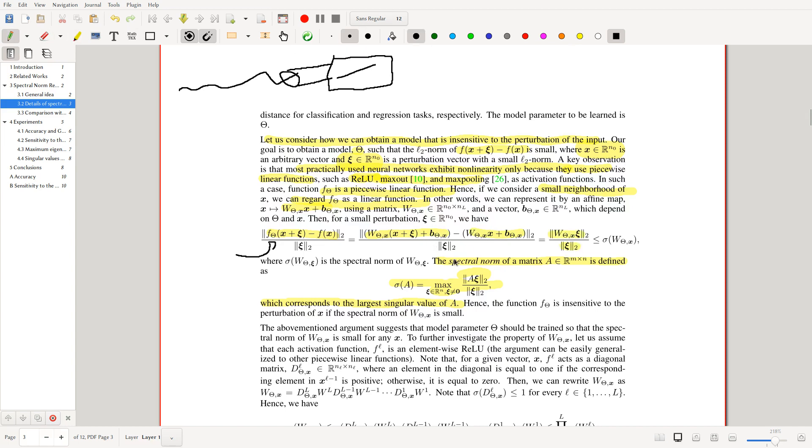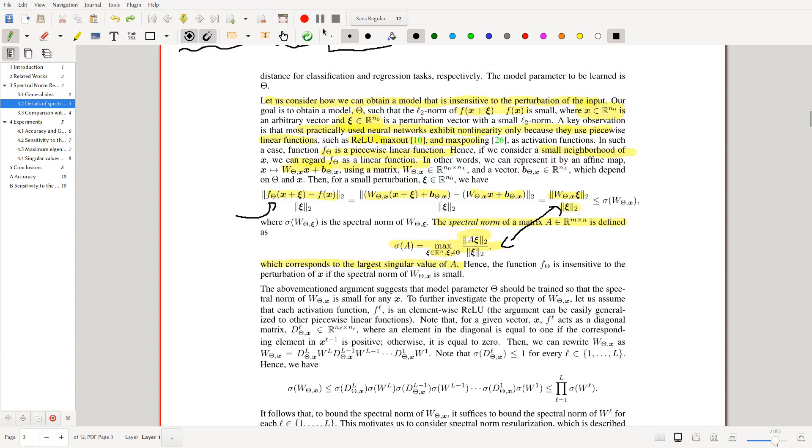But hold on. This value is very similar to this, right? In fact, the only difference is that this has a maximization term. So what we can do is we can say that this is actually bounded by the max of this, right? Because these two values are the same, just that one is taking the maximum possible value of this. So we can obviously bound it above by this. Hence the function f theta is insensitive to the perturbation if the spectral norm is small. Because just by analyzing this, if this is small, it's obviously bounding by above the other quantities. So the effect of this initial perturbation has to be small.